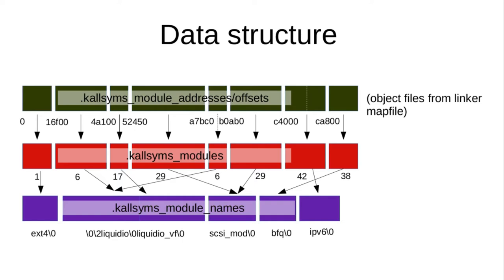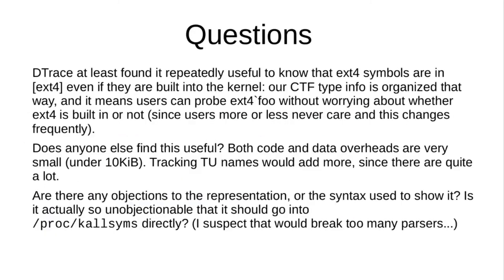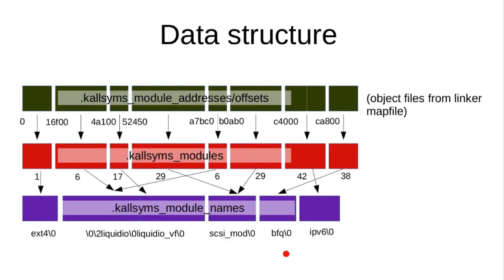You might want to know what module a data symbol came from, but the linker map file doesn't list those. I don't know any way to get that information in practice — specifically, how to find out what module or translation unit a data symbol came from. The linker won't tell us as far as I can see.